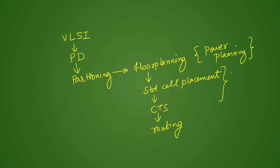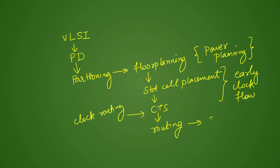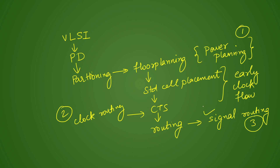Because of very complex flows and shrinking technology, there is something called early clock flow in which we do some part of CTS in the placement itself. But if you go by the book, standard cell placement comes first, then CTS where we do clock tree synthesis — so clock routing is done here. Then comes routing, which is nothing but signal routing. So there are three stages where some part of routing is already done.